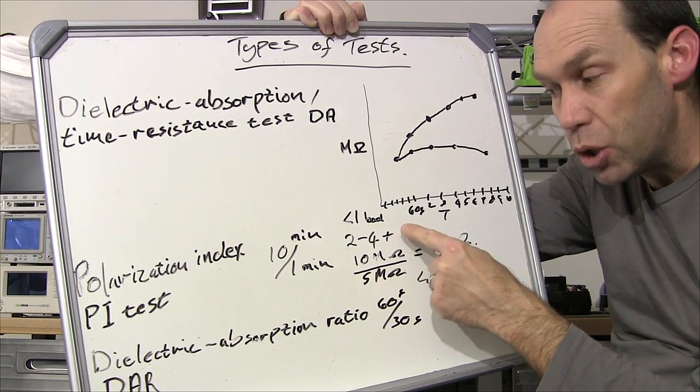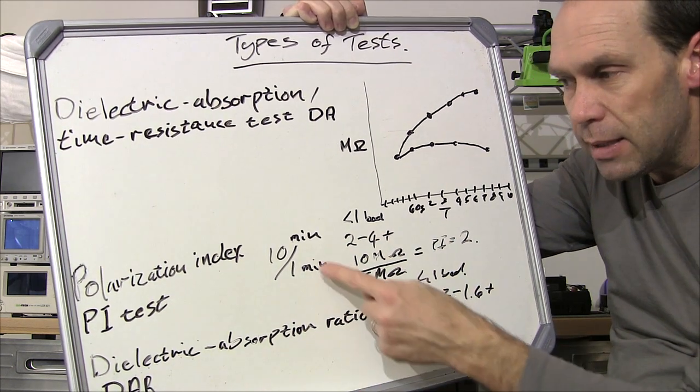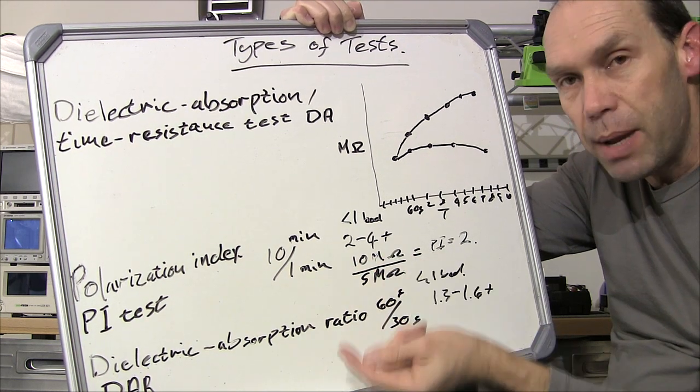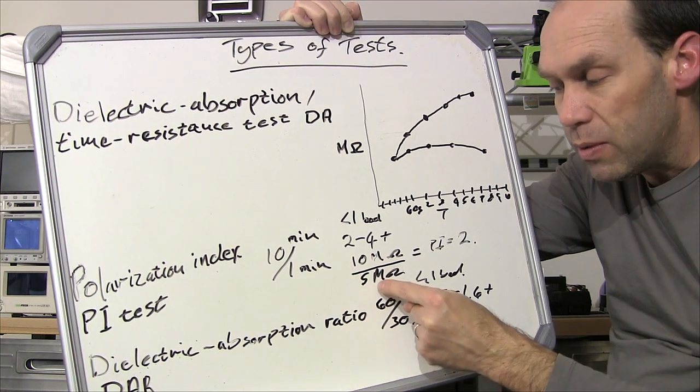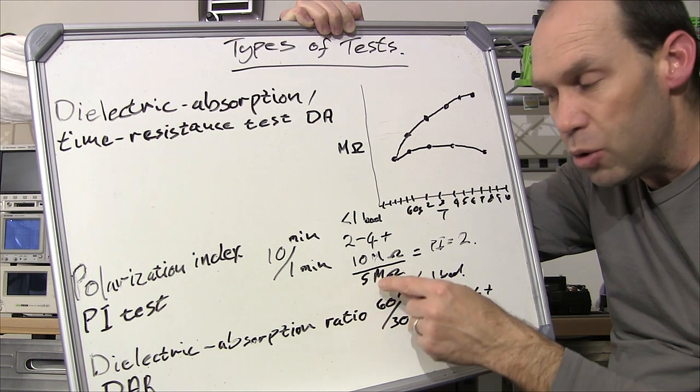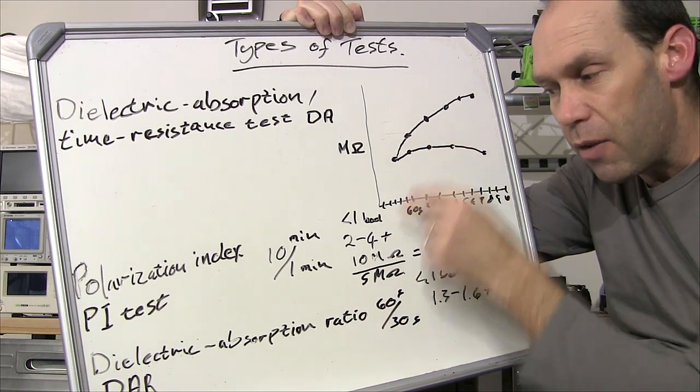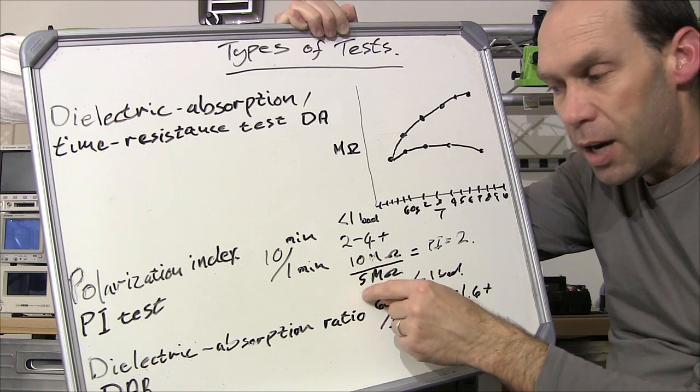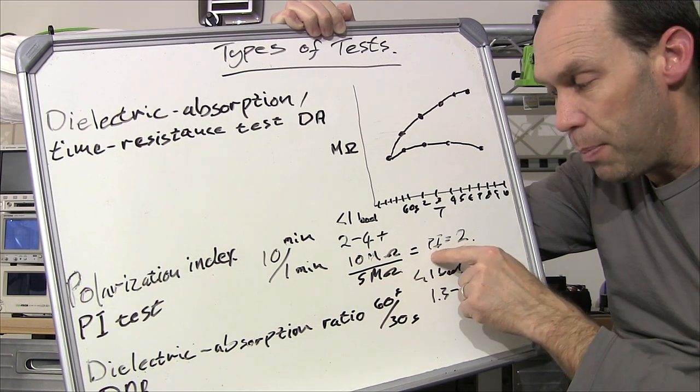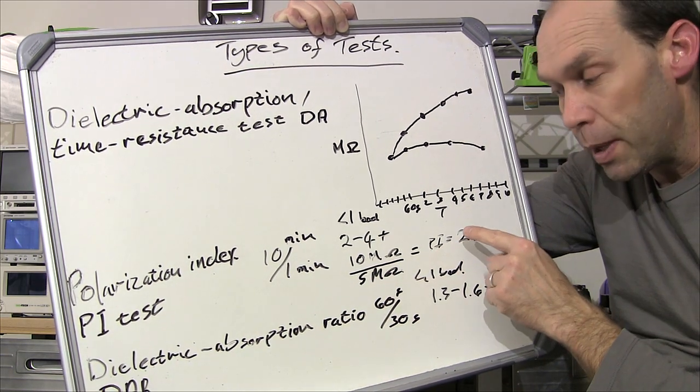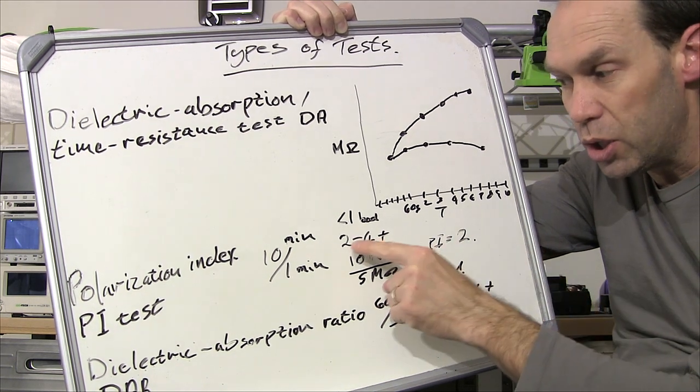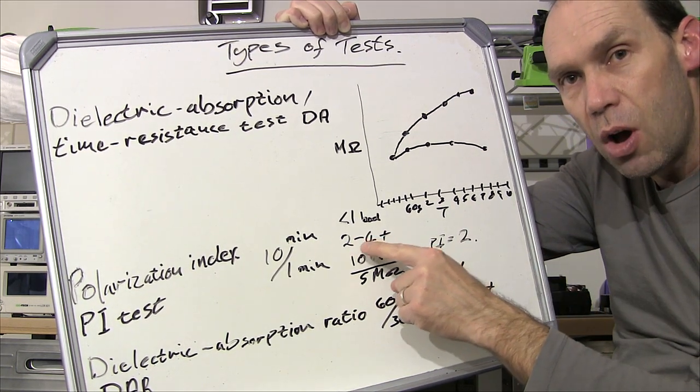As an example let's say our 10 minute reading was 10 mega ohm, our one minute reading was five mega ohm. Obviously assuming that your resistance is going to be low initially and then kind of march up, 10 divided by five is going to give you a PI of two. So that would be your ratio and two would just put you in the grounds of things are just about okay.